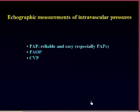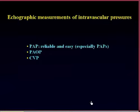We can also use echocardiographic measurements of intravascular pressure. The advantage is that we will not face the problem of transmitted pressure. Pulmonary artery systolic pressure is reliable and easy to measure with echo, though other pressures are a little more difficult.